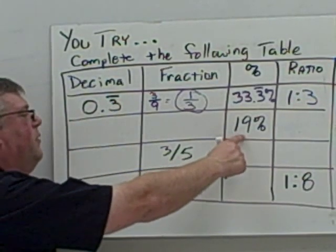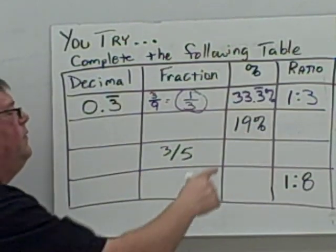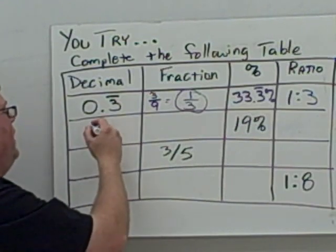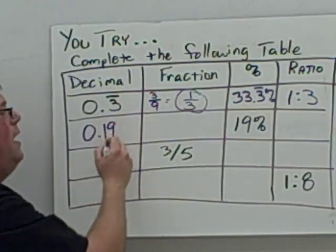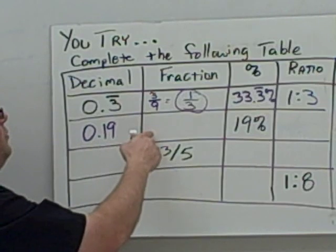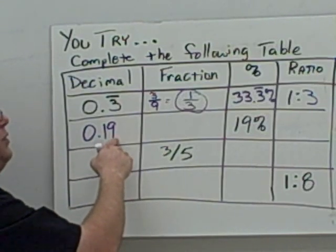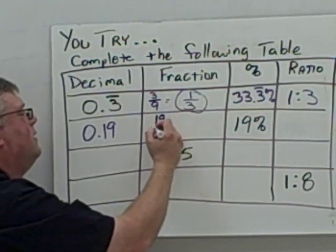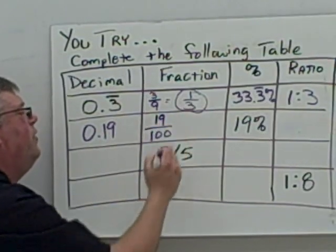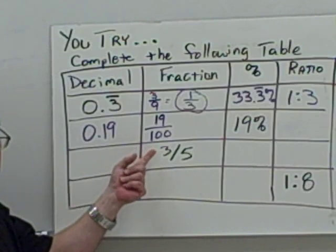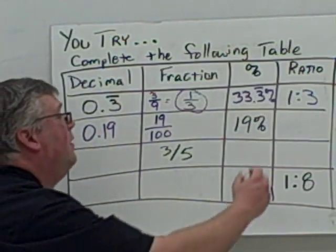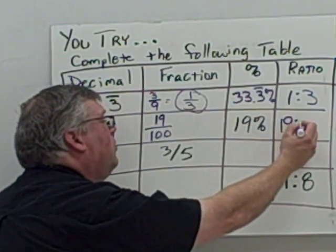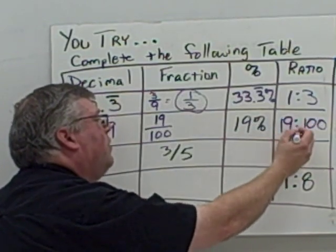Now with 19%: to convert percent to decimal, move the decimal point two places to the left — you get 0.19. To convert that to a fraction, two decimal places means 19 over 100. It can't be reduced, so it stays that way. Converting from the fraction to the ratio: 19 colon 100.